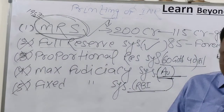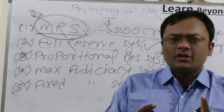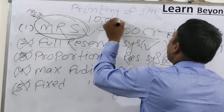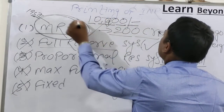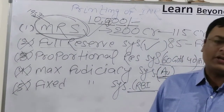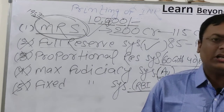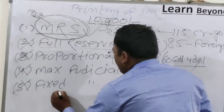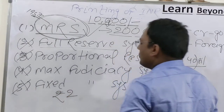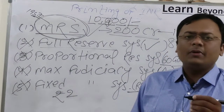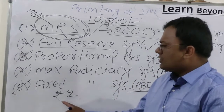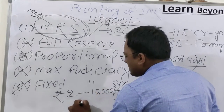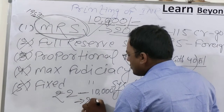Two important facts: RBI has permission to print notes up to 10,000 rupees maximum, but at present the 10,000 rupee note is not a legal tender and is not in circulation. The minimum legal tender printed by RBI is 2 rupees — not 1 rupee, since RBI does not print the one rupee note. So in exams: minimum denomination printed by RBI is 2 rupees; maximum denomination currently in circulation is 2000 rupees.